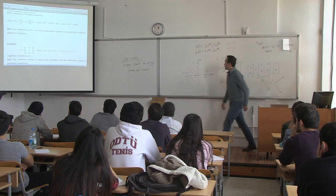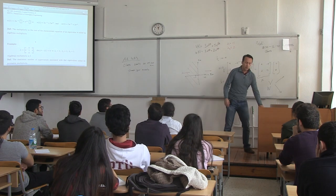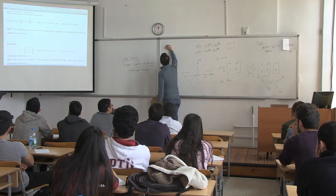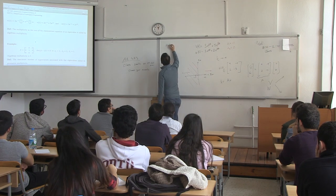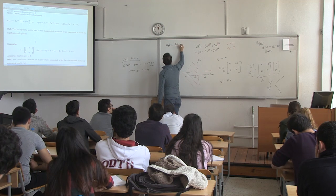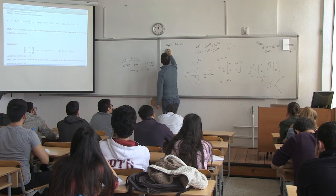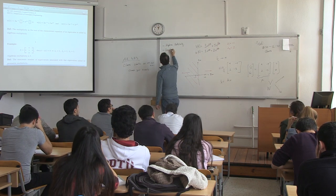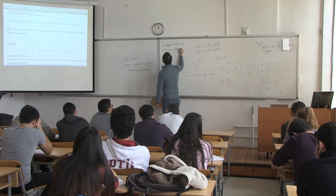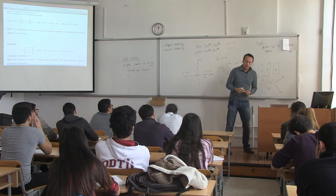The next thing to look at is two definitions: geometric multiplicity and algebraic multiplicity of eigenvalues.